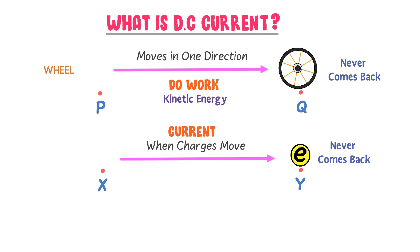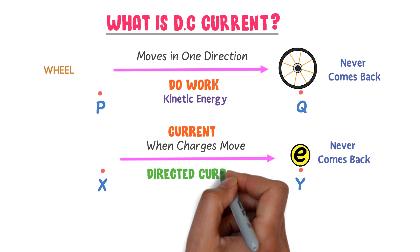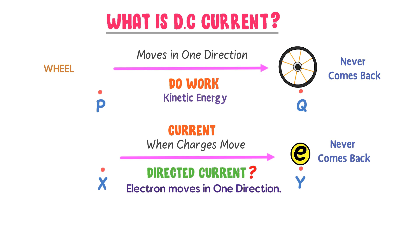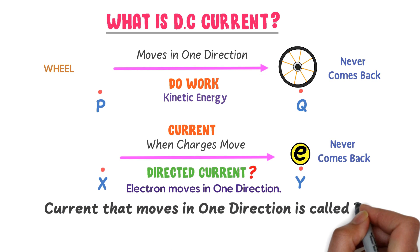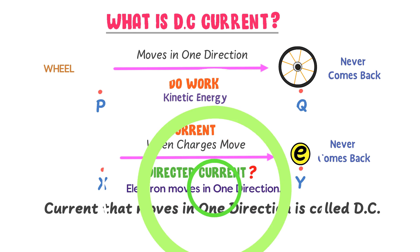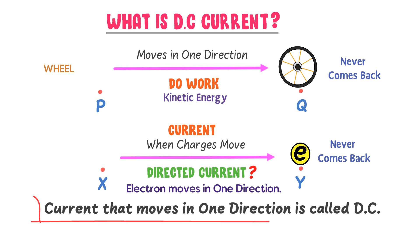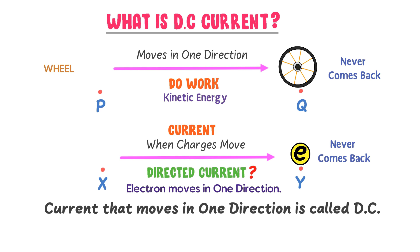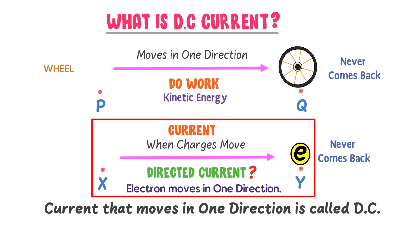Now listen carefully. I personally say that there is directed current between point X and point Y, because this electron is moving in one proper direction — it doesn't change its direction. So therefore, a current that moves only in one direction or forward direction is called direct current. DC current is directed current that moves only in one proper direction or forward direction.